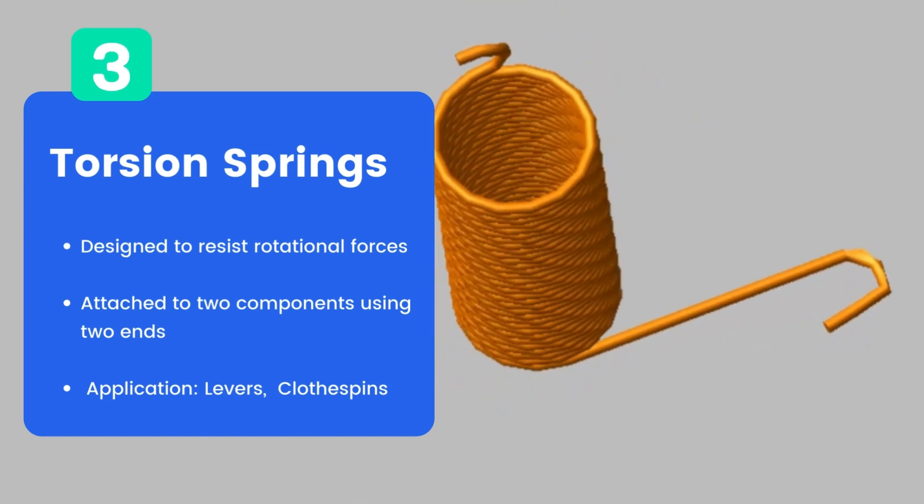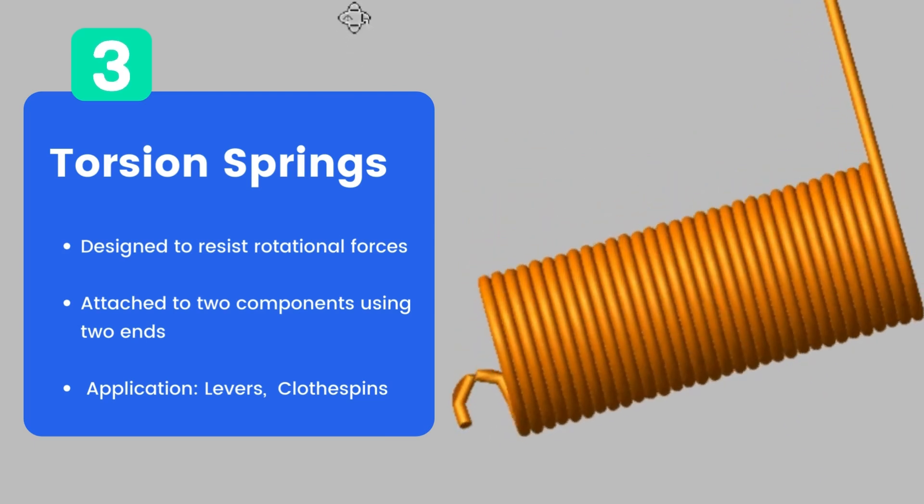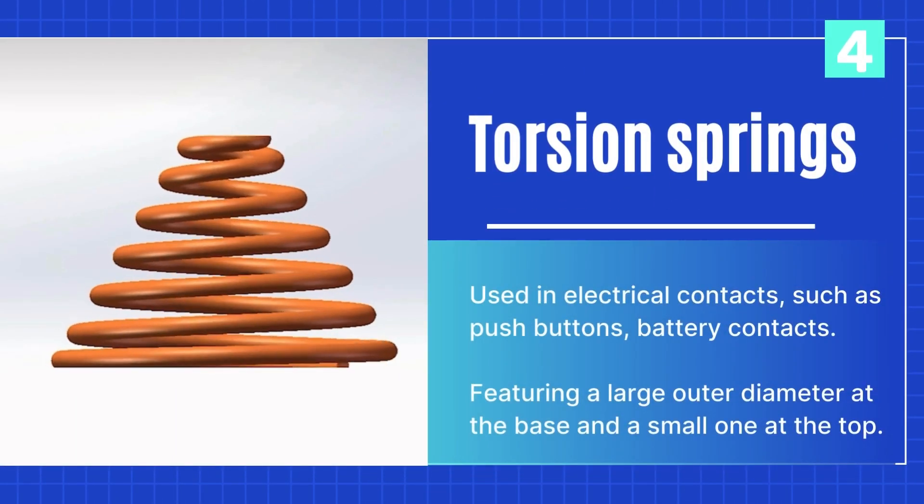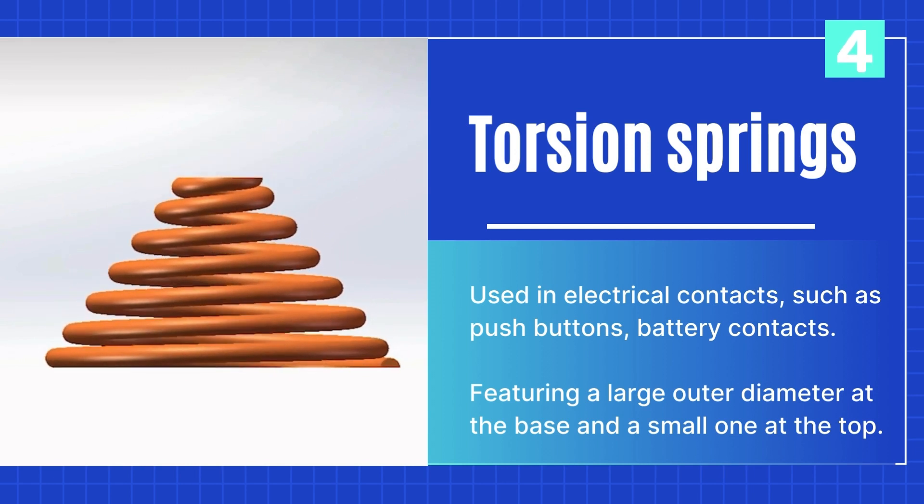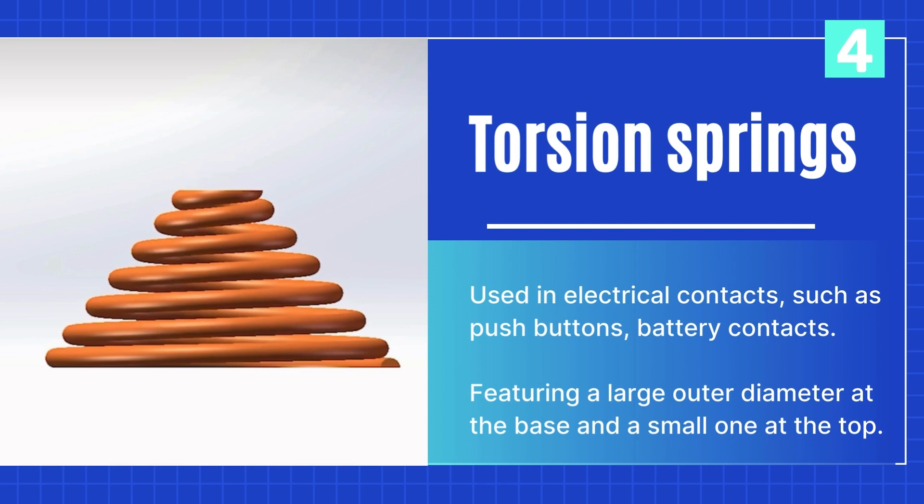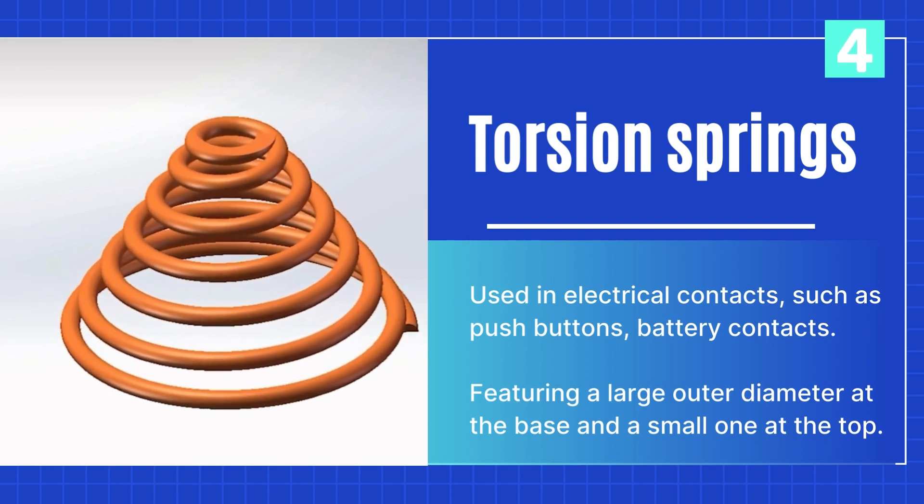Springs also love to twist. Torsion springs are designed to resist rotational forces and are attached to two components using two ends. Clothespins are the most understood application. Ever inserted batteries into your TV remote? You've used conical springs.